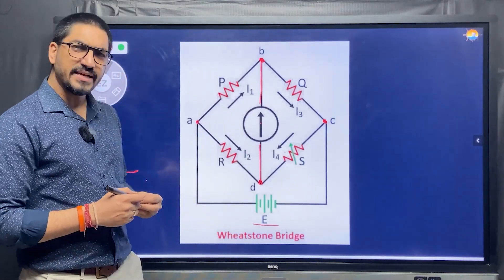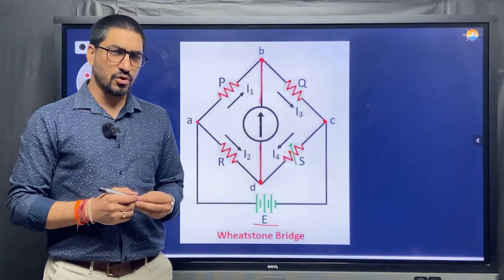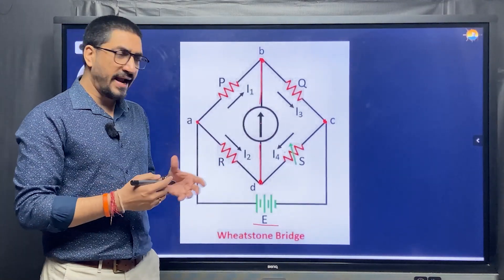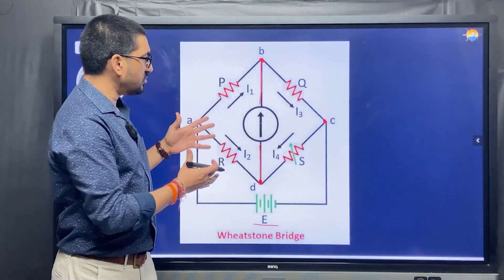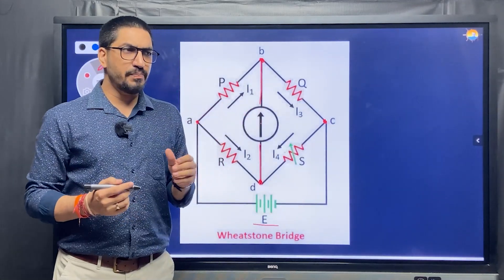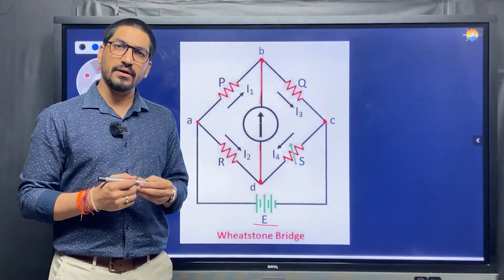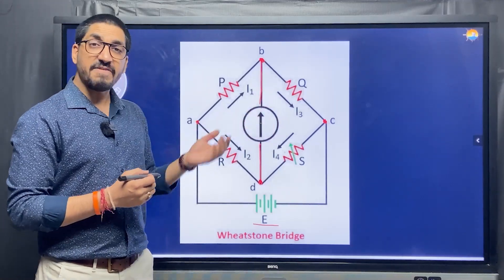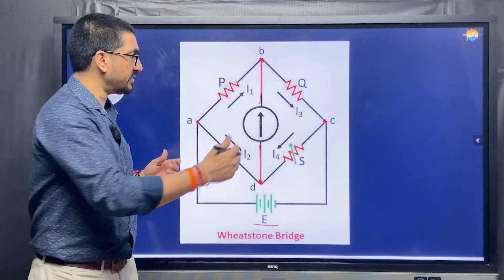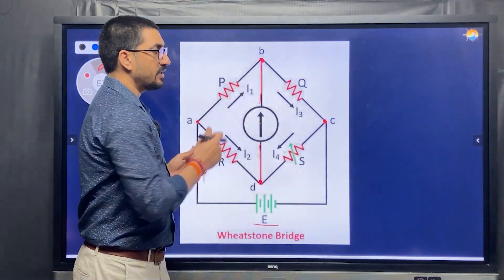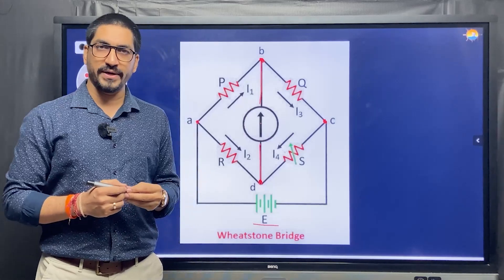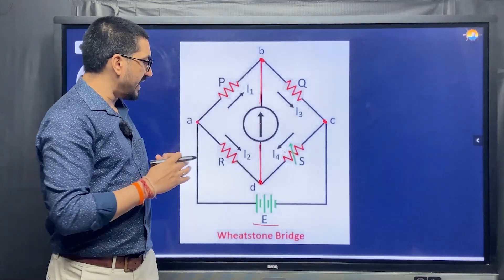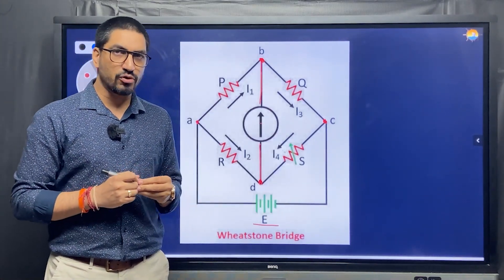This Wheatstone Bridge is basically named after Mr. Charles Wheatstone, because he basically improved this bridge a lot. And why are we using such an arrangement is because this is very sensitive equipment and it can measure changes in the resistance very effectively. If there is any change in the resistance in these arms, then we can get a deflection at the galvanometer.